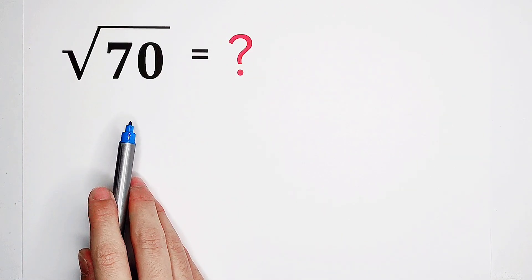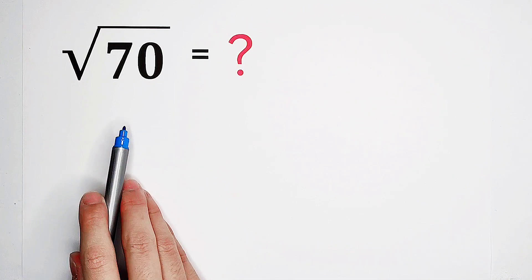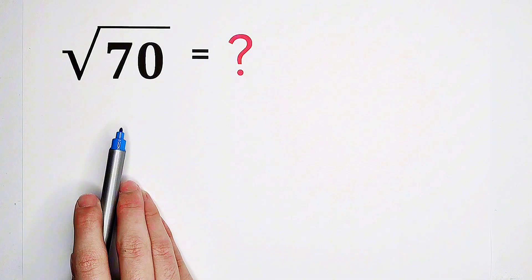Approximate square root of 70. How should I solve it? Of course, there is a very good formula for approximation.